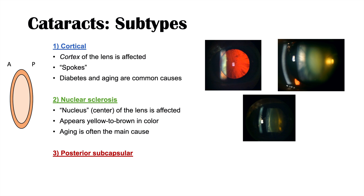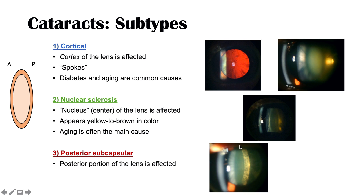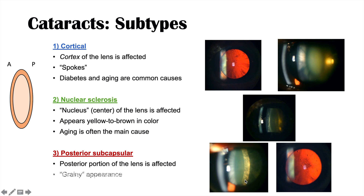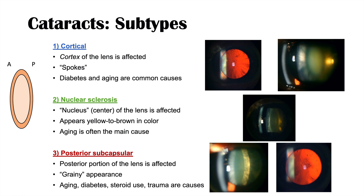The third type is the posterior subcapsular cataract, where the posterior portion of the lens is affected. When viewed with the slit lamp at an angle, it looks somewhat grainy in appearance, almost like a residue on the back of the lens. When viewed straight on, you can see this residue-like appearance at the posterior surface. Aging, diabetes, steroid use, and trauma are causes of this type of cataract.